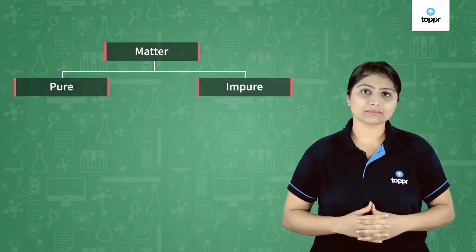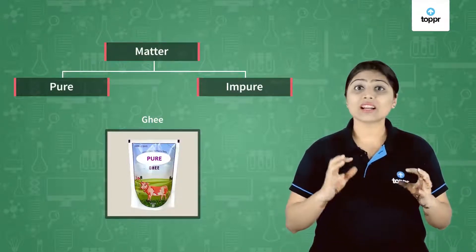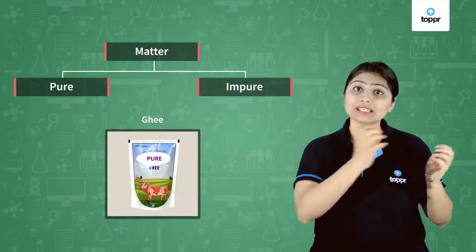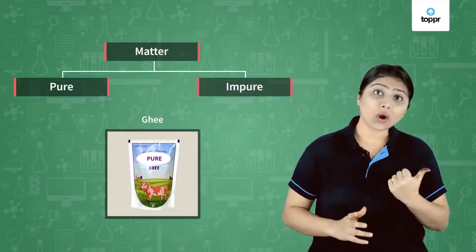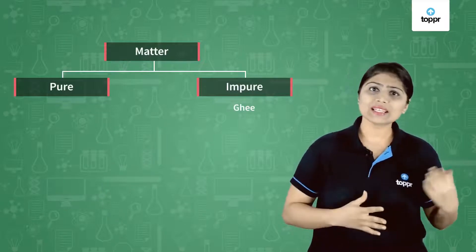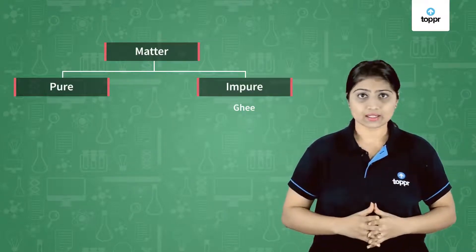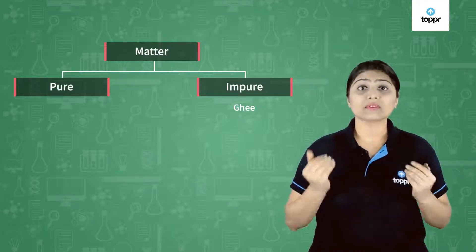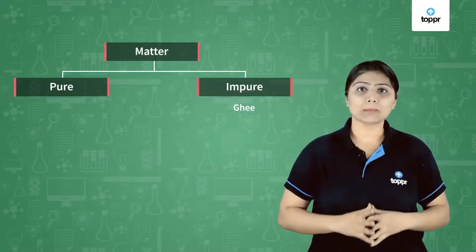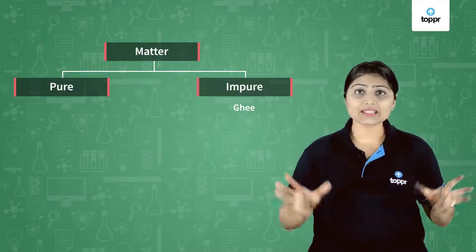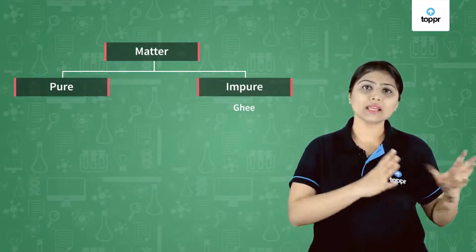Let's take one example: Ghee. For us, ghee is pure if it is not adulterated — that means there are no other substances apart from ghee mixed inside. But according to scientists, even pure ghee is impure matter. Why? Because ghee is made up of different things: fats, vitamins, cholesterol, and so many things. So according to scientists, ghee is an impure matter. Anything that is made up of different substances or different kinds of particles is called impure matter.